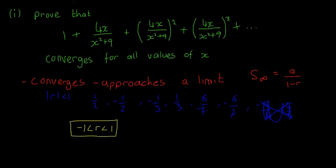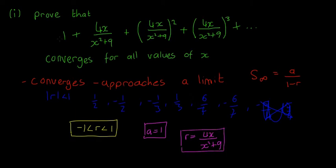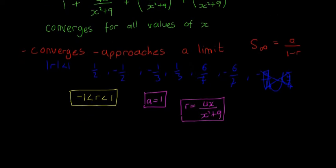To prove that this series converges, we have to prove that condition. First, we find r for this specific series. The first term a is 1. The common ratio r is 4x divided by (x² + 9) — put a box around that — because each term is multiplied by 4x/(x²+9) to get the next term.